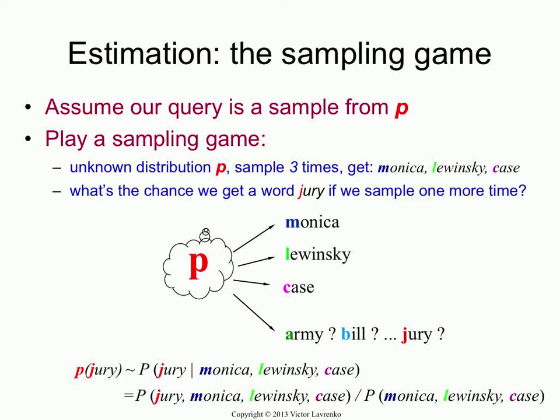Then you repeat this process for every word in the vocabulary. You do it for army, for bill, for jury, for zoo. You get a probability distribution over the entire vocabulary. That is what you want. That is your p.